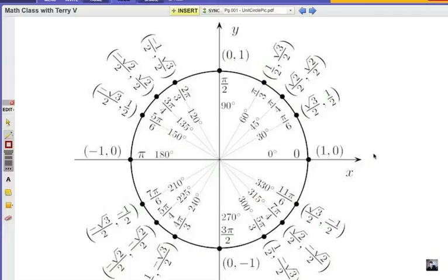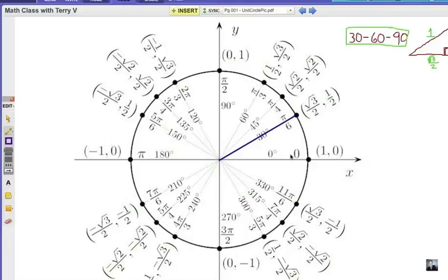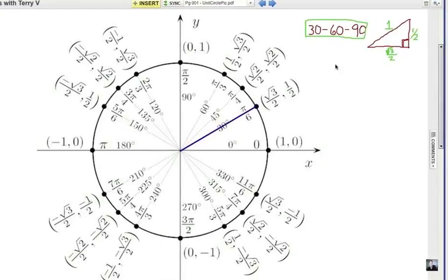Alright, now first of all, where do we find those 30, 60, 90 triangles in the unit circle? Well, the basic shape, of course, looks like that, and we said that the short leg is 1 half, the long leg is radical 3 over 2, and a 30 degree angle, or Pi over 6.